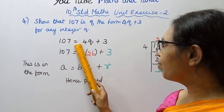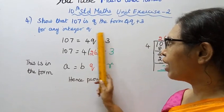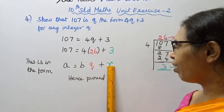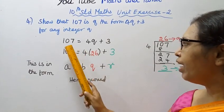107 equal to 4Q plus 3. This is what formula is A equal to BQ plus R. Okay, upon 107, 4 divide.